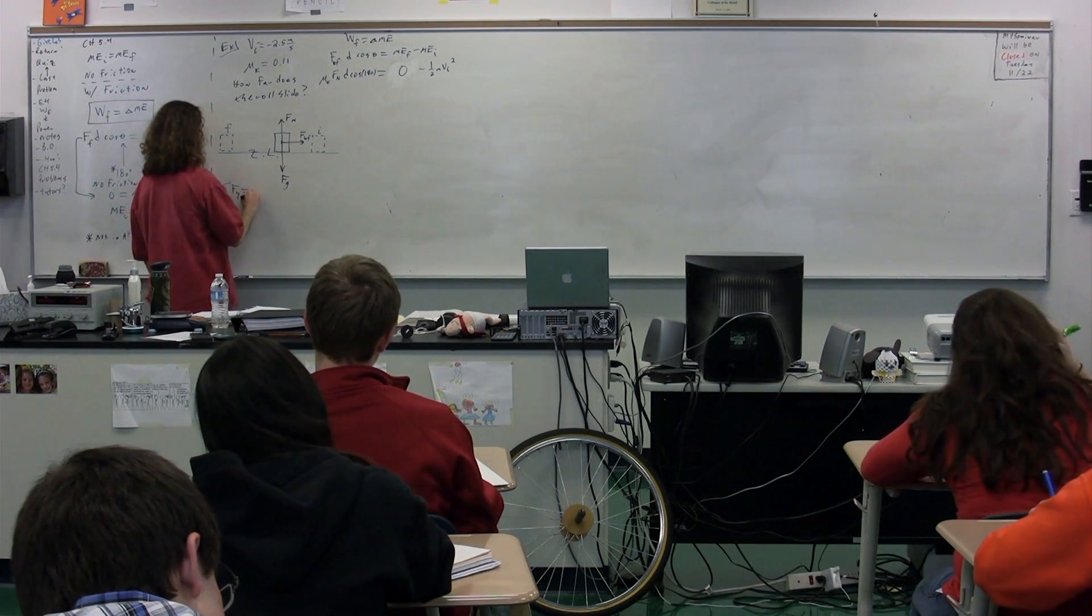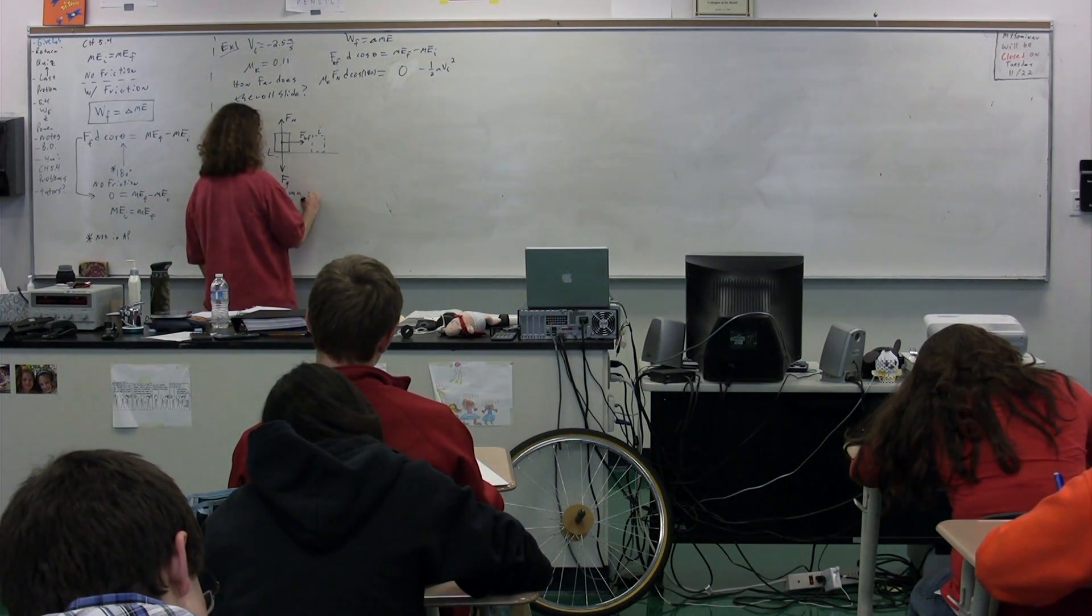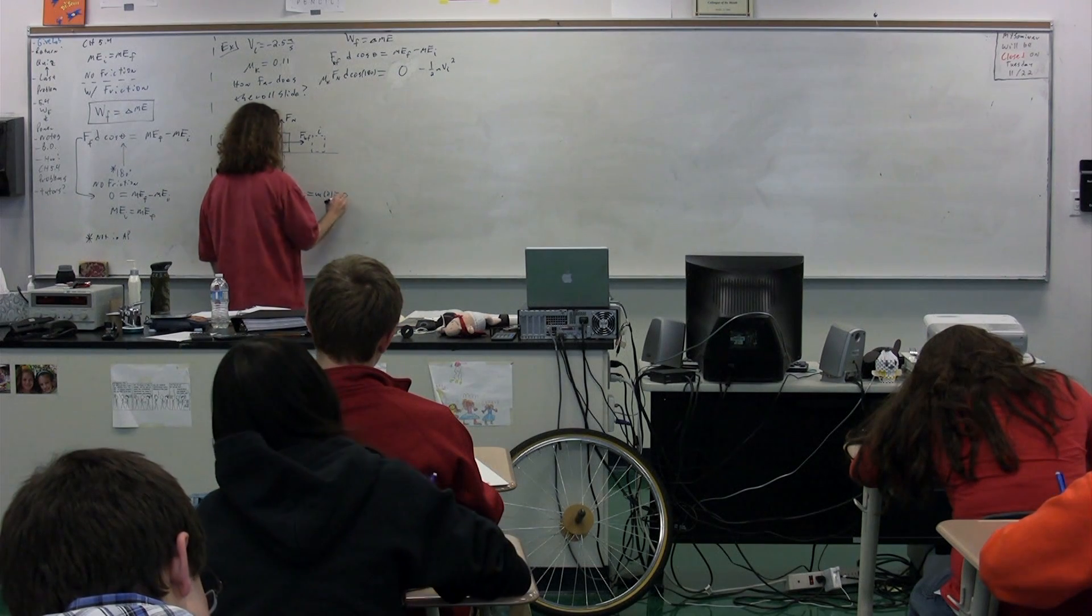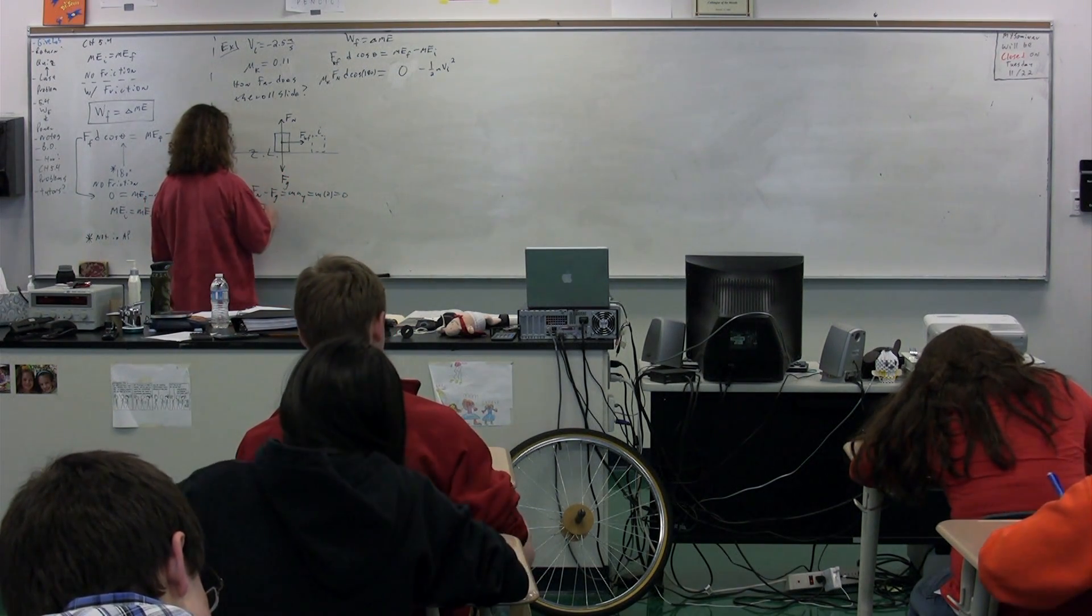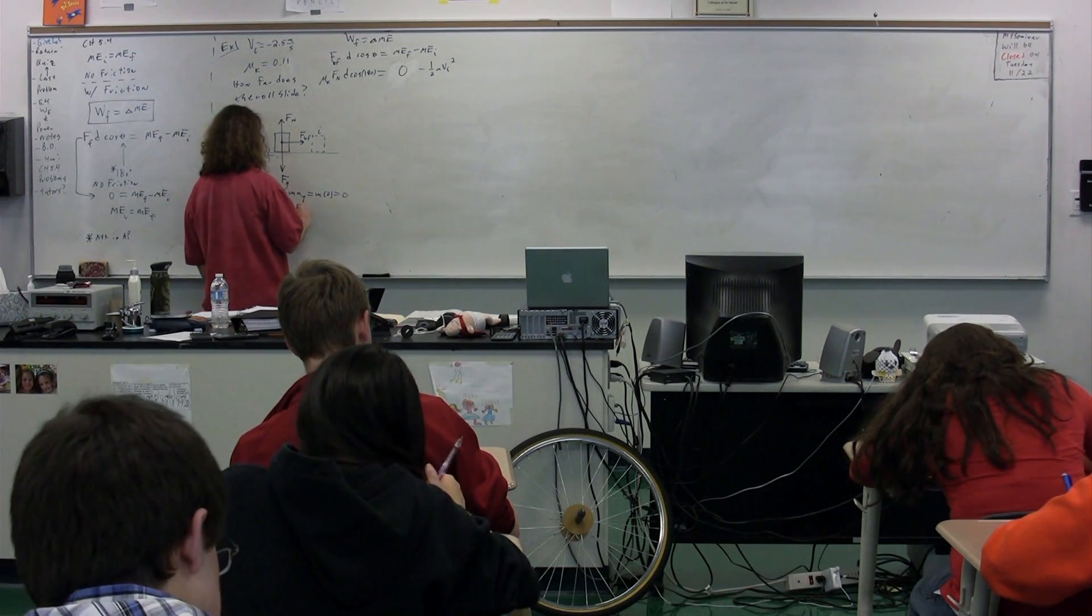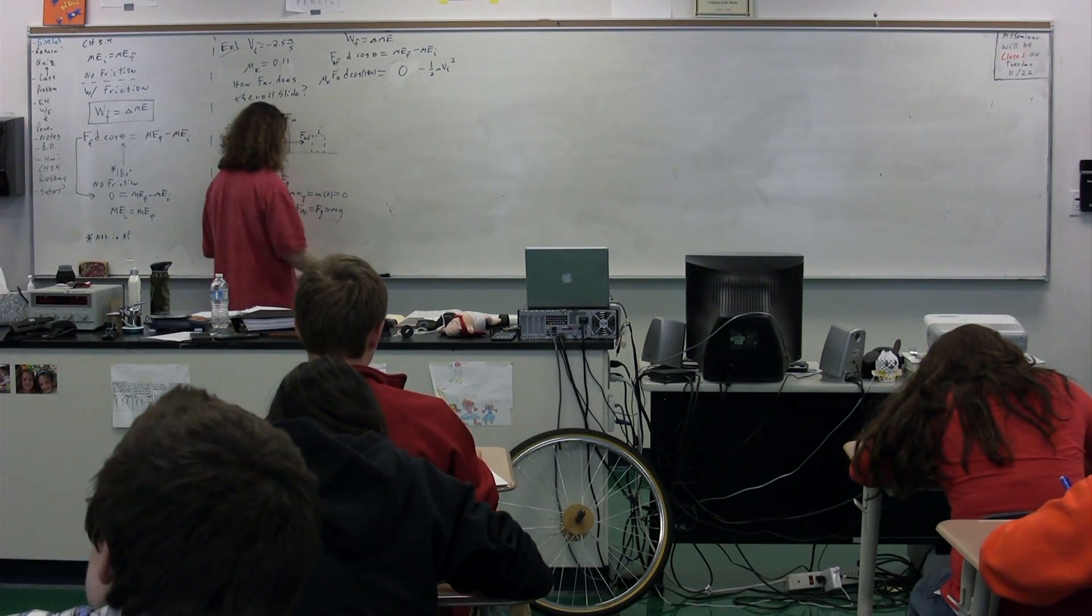We need to figure out the force normal. So we can sum the forces in the y direction. We get force normal minus the force of gravity equals mass times the acceleration in the y direction. The acceleration in the y direction is equal to zero because it's not moving up or down. Therefore, we get the force normal minus the force of gravity is equal to zero. Therefore, we can add the force of gravity to both sides. We get the force normal equals the force of gravity which equals mass times the acceleration due to gravity.